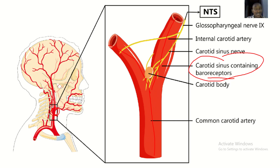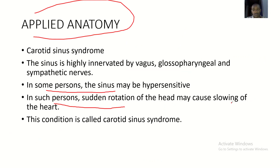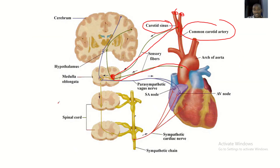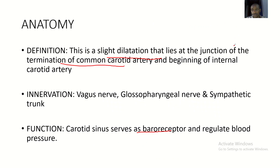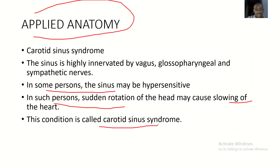Normally, head rotation has no effect because the carotid sinus is not hypersensitive. But when it is hypersensitive and you rotate your head, it will cause slowing of the heart, because the sensory fibers from the carotid sinus travel to the medulla and the heart picks up some of these sensory fibers related to the carotid sinus. The condition of slowing of the heart as a result of hypersensitivity of the carotid sinus is called carotid sinus syndrome.